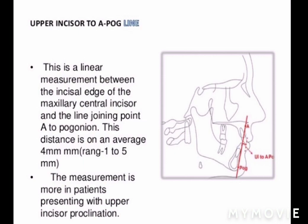Next is the upper incisor to A-Pog line. There is a line joining point A to pogonion, and we measure the relation of the upper incisors to this line. This is a linear measurement between the incisor edge of the maxillary central incisor and the A-Pog line. The average distance is 4 mm, ranging from 1 to 5 mm. This measurement is greater in patients presenting with upper incisor proclination, giving a positive value.